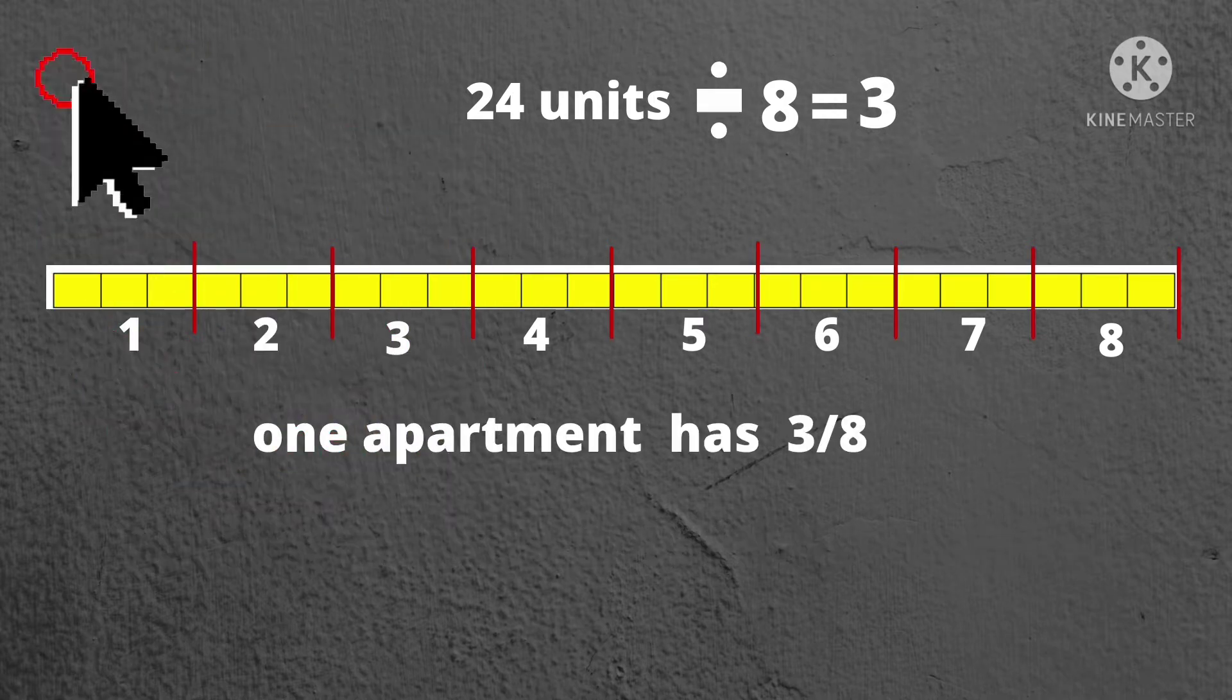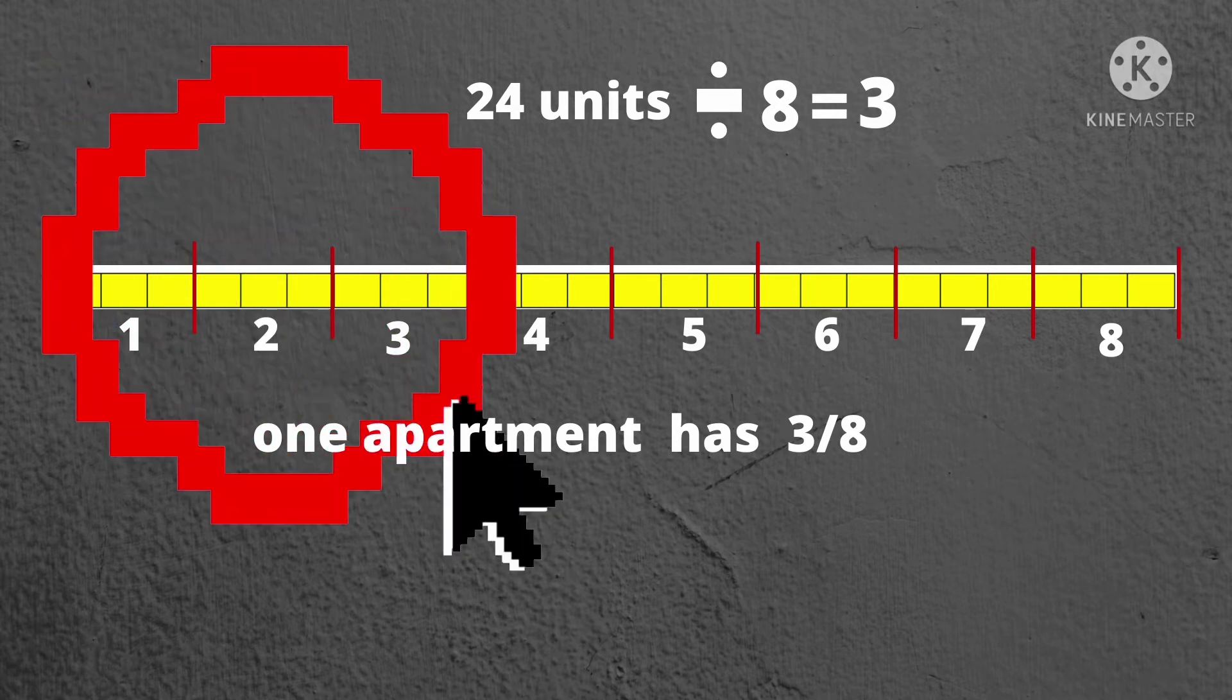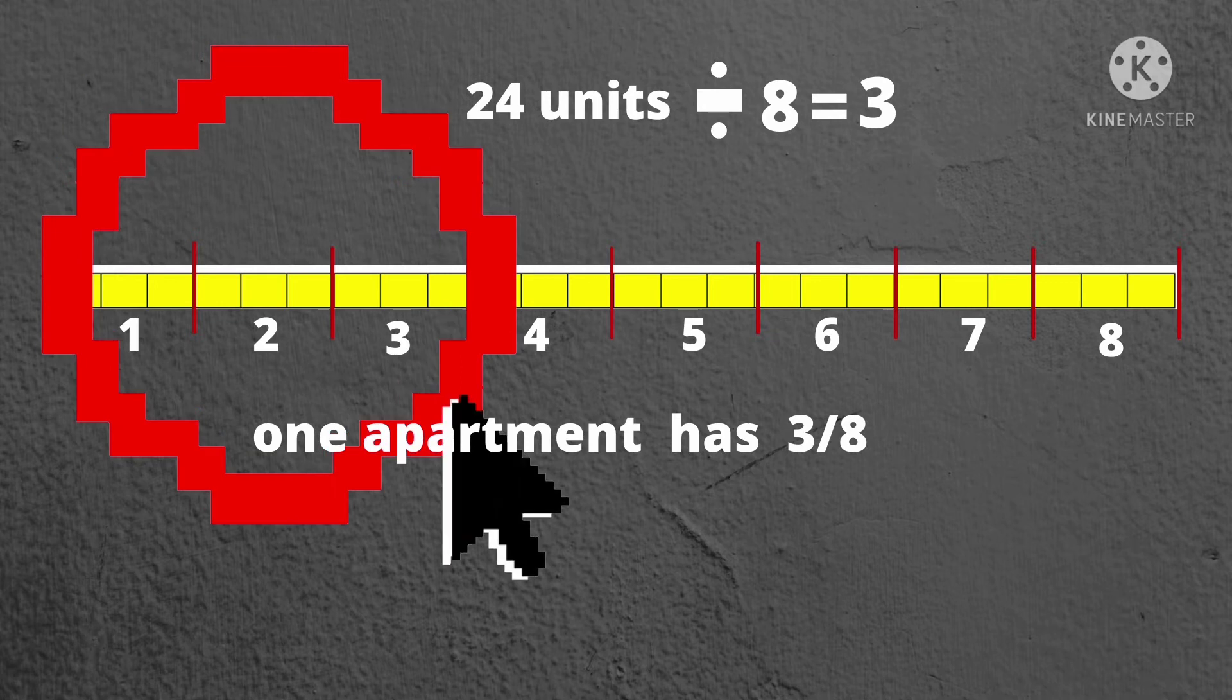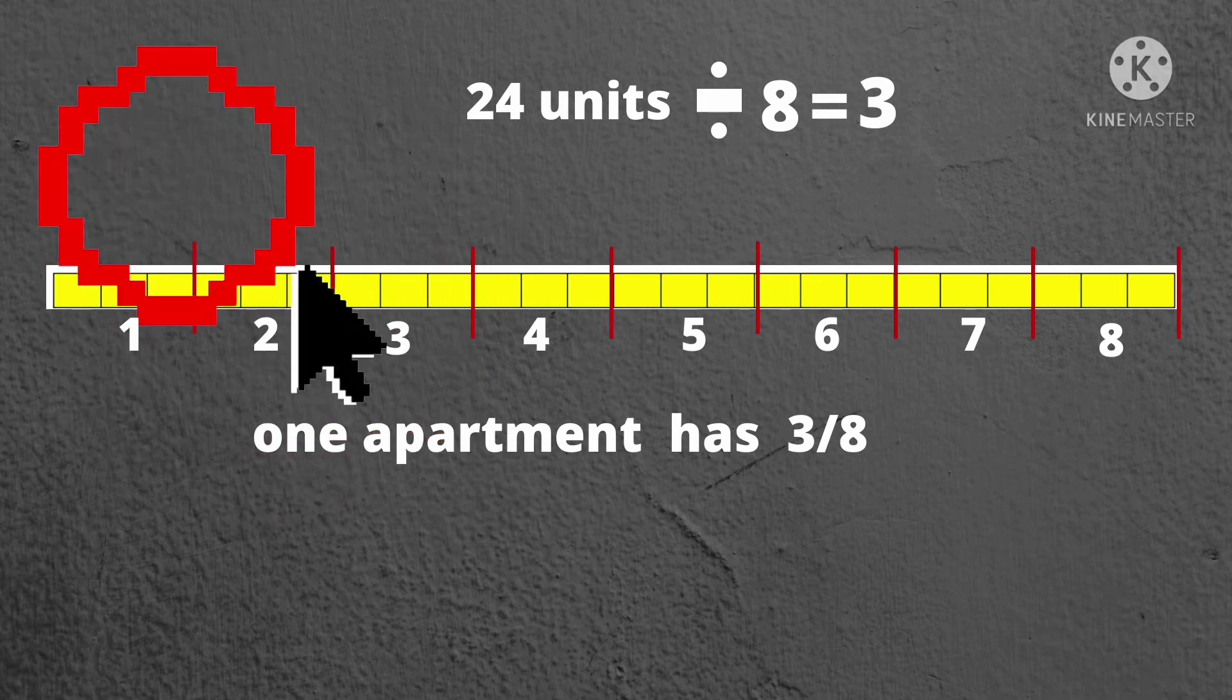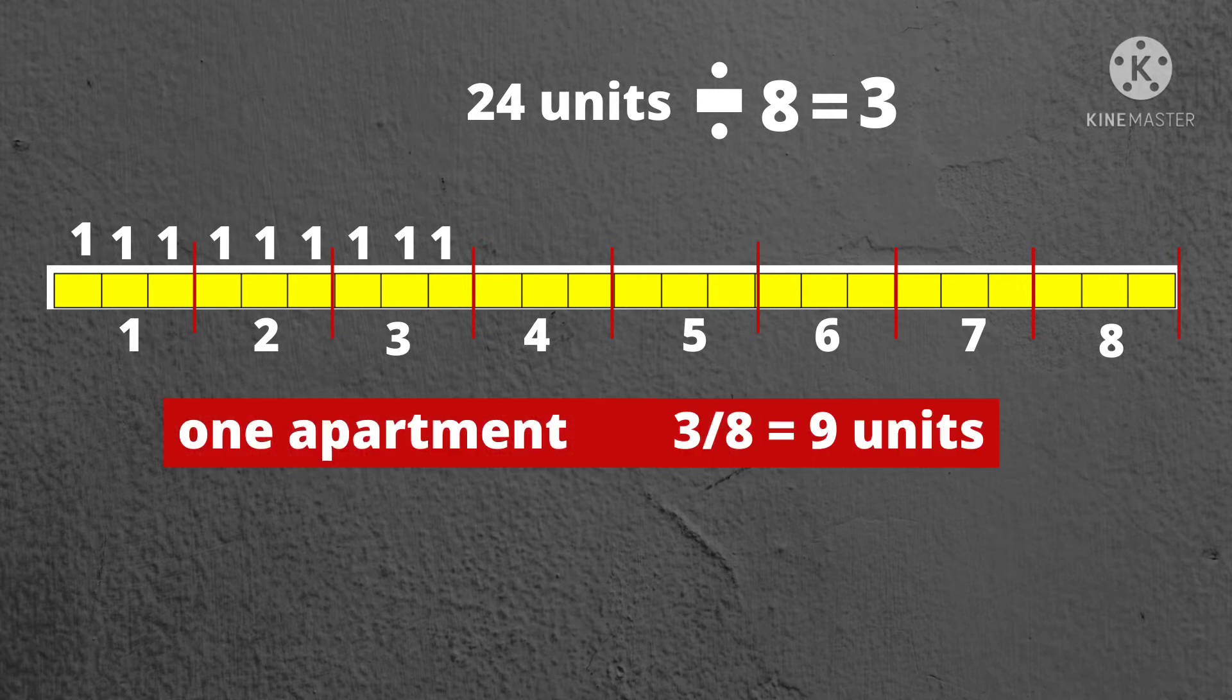Out of these 8 groups, we will only identify the 3 parts of it. And later, we will be counting the units under this three-eighths. Let's now count the number of units indicated above: 1, 2, 3, 4, 5, 6, 7, 8, 9. There are 9 units, meaning in one apartment building, there are 9 newspapers delivered.